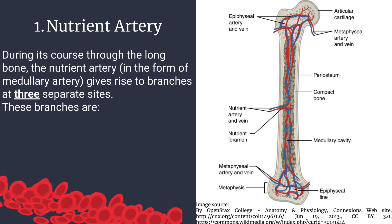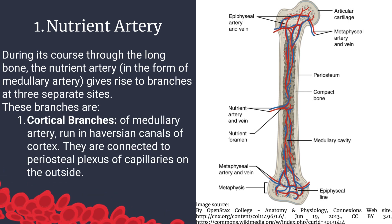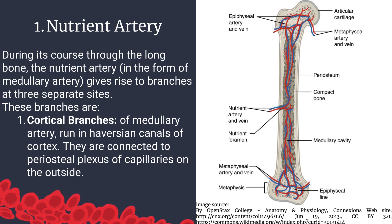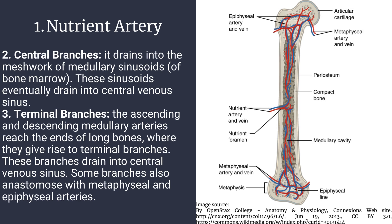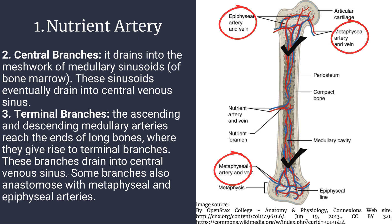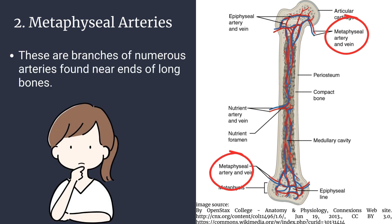The medullary artery gives rise to branches at three separate sites. Cortical branches run in Haversian canals of the cortex and are connected to the periosteal plexus of capillaries. Central branches drain into the network of medullary sinusoids of bone marrow, which eventually drain into the central venous sinus. Terminal branches from the ascending and descending medullary arteries reach the ends of long bones and drain into the central venous sinus, with some branches also anastomosing with metaphyseal and epiphyseal arteries.